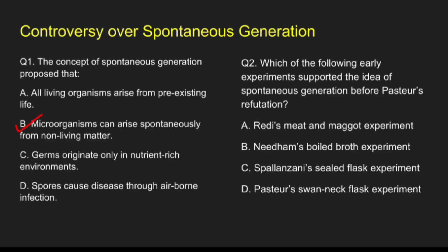Question 2: Which of the following early experiments supported the idea of spontaneous generation before Pasteur's refutation? Option A, Redi's meat and maggot experiment; Option B, Needham's boiled broth experiment; Option C, Plansy's sealed flask experiment; Option D, Pasteur's swan neck flask experiment. The correct answer is option B, Needham's boiled broth experiment. In 1745, John Needham boiled the broth, sealed it, and still found microbial growth, interpreting it as evidence for spontaneous generation.